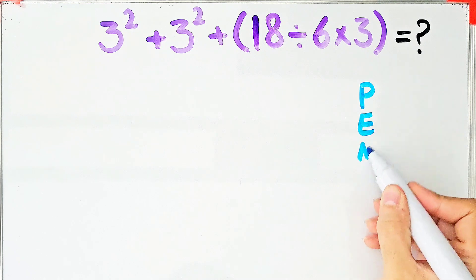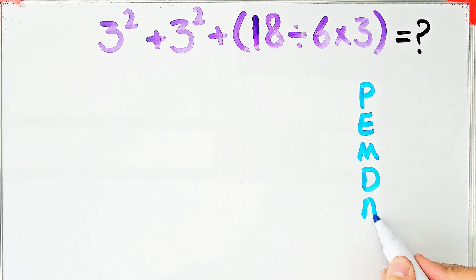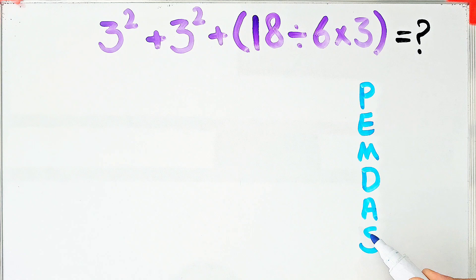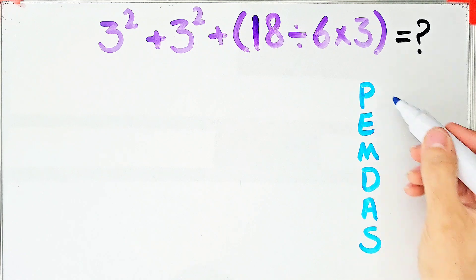PEMDAS shows the priority of mathematical operations. If you don't pay attention to this rule, you get the wrong answer.